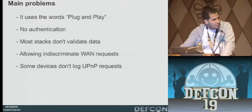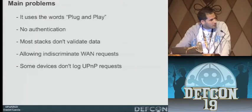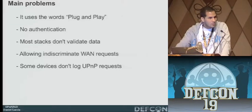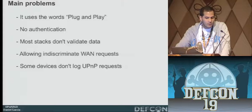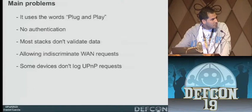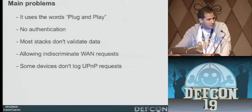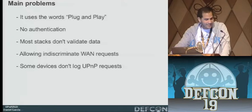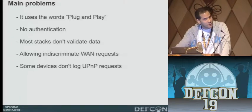The other problem: UPnP was designed for LAN use, but many devices allow indiscriminate WAN requests — UPnP action requests coming from the WAN — which doesn't make any sense. The IGD version 1 protocol says specifically it's not recommended to do that. To give them credit, in IGD version 2 they put that sentence in caps, so they're making a stronger point now.